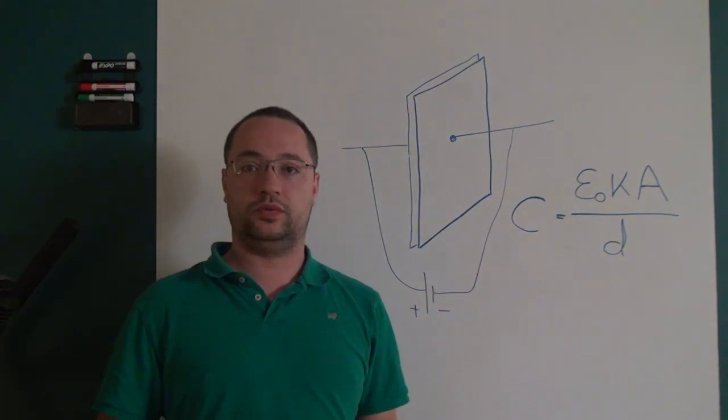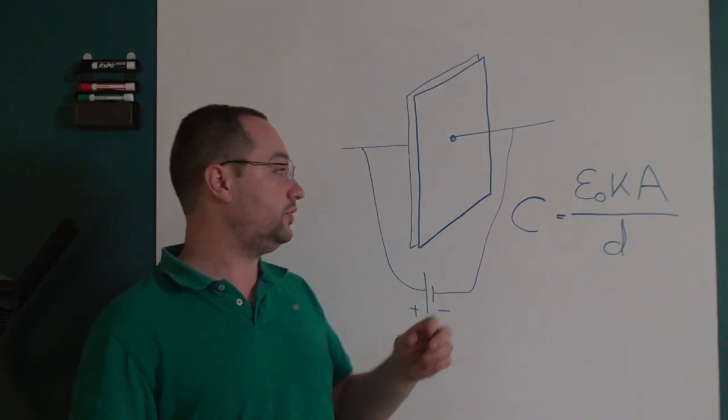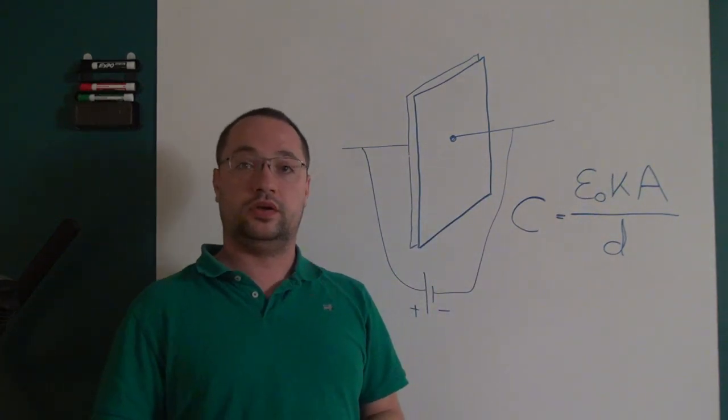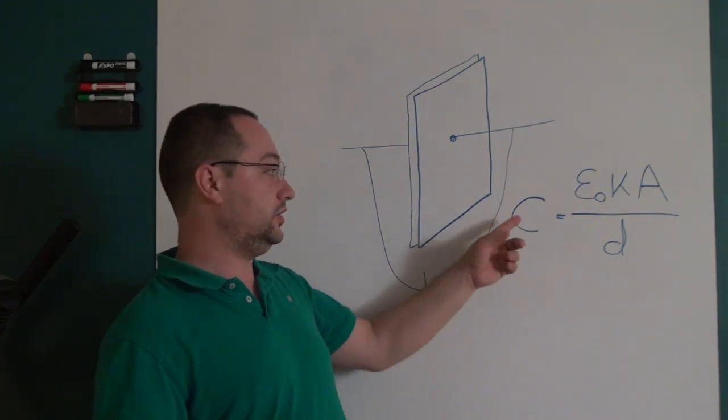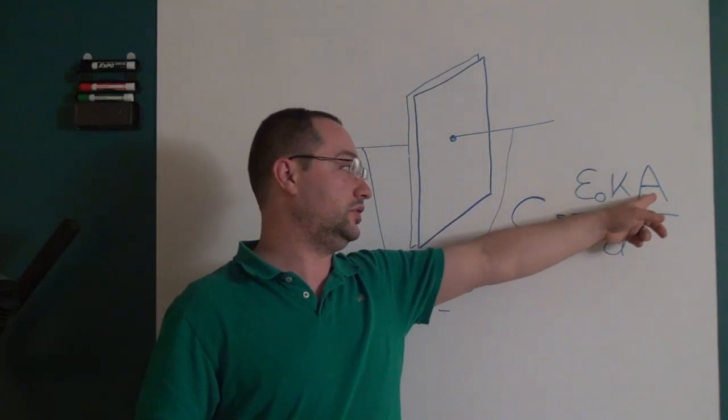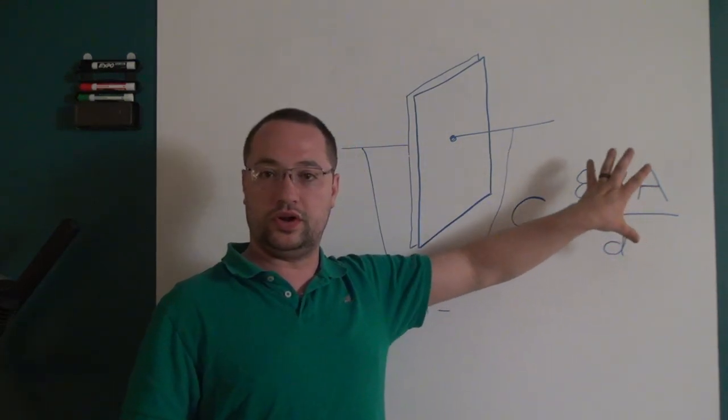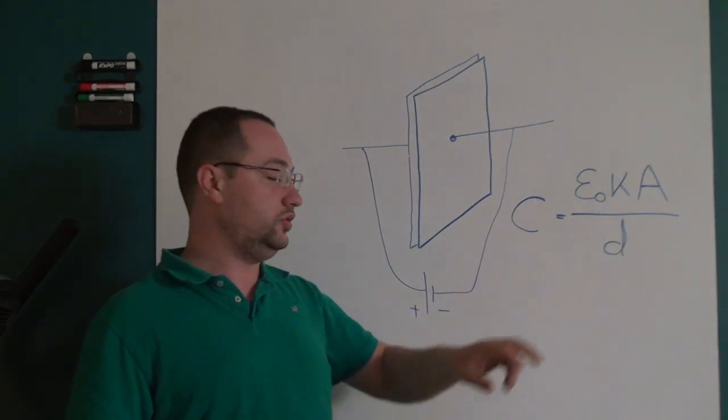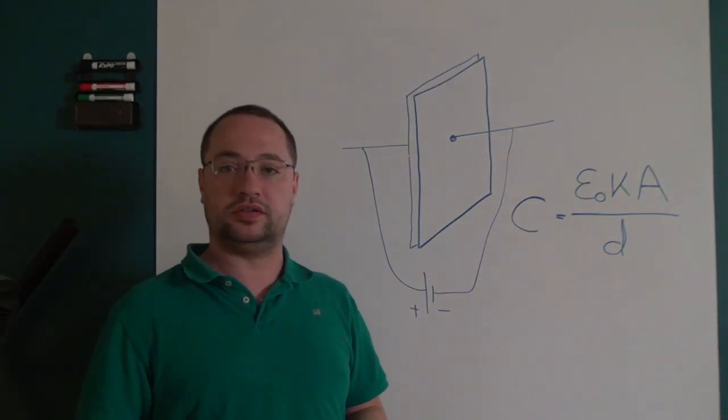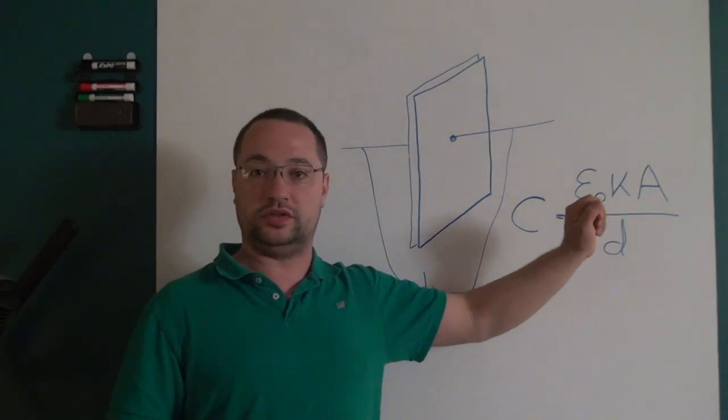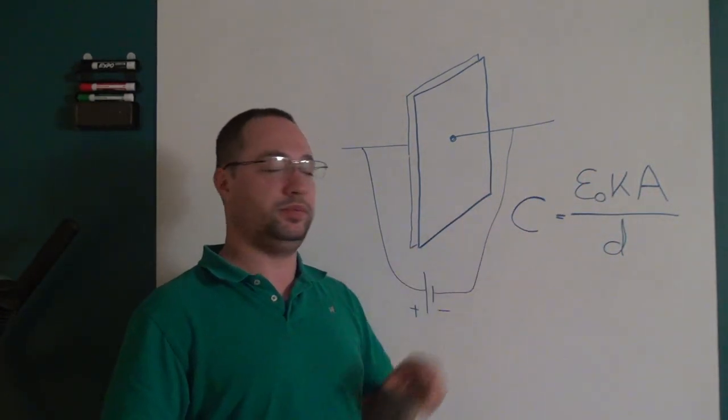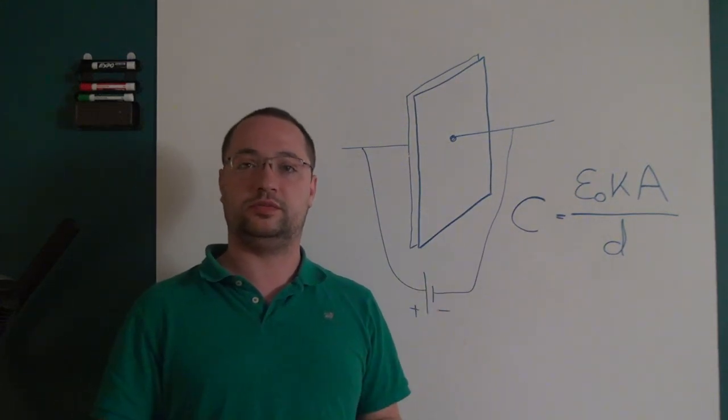This fairly simple formula tells us a few things off the bat. If you make the area larger you get more capacitance and it's a direct relationship because the area is in the numerator of this fraction. The more area you get, you increase the capacitance the same proportion. If the area gets twice as big the capacitance gets twice as big. If the area gets half as much the capacitance gets half as much. It's very simple that way.